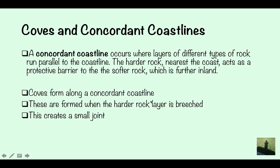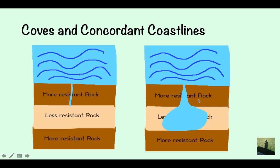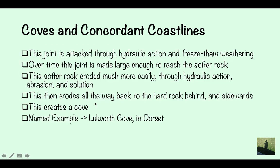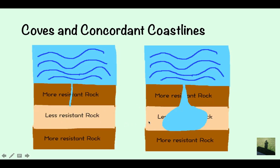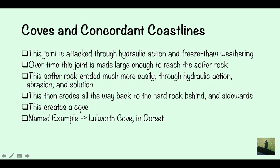Coves form along a concordant coastline. They're formed when the hard rock layer is breached, creating a small joint. This joint becomes larger and larger as it's targeted by erosion, hydraulic action, and weathering. Over time this joint is made large enough to reach the softer, less resistant rock, which is then eroded much more easily through hydraulic action, abrasion, and solution.